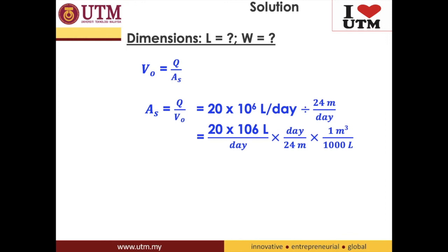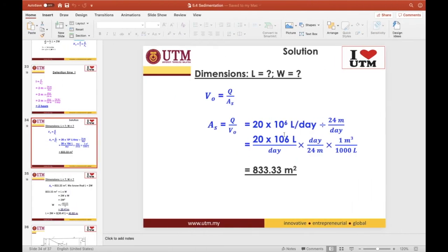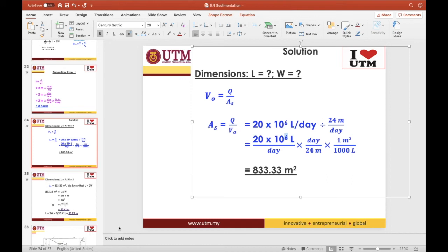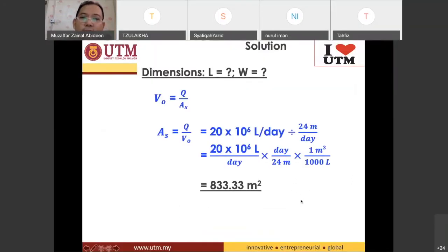This is not supposed to be, sorry, yes, this is not 106. That's supposed to be to the power of 6. Is the answer is given already. So the answer for AS is 833.33 meter square.